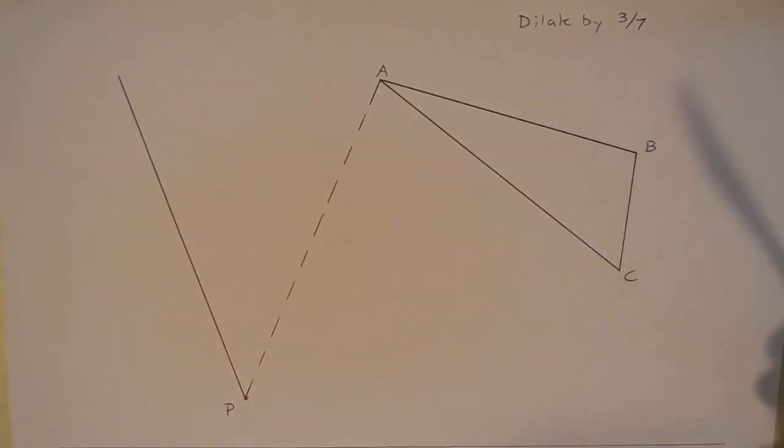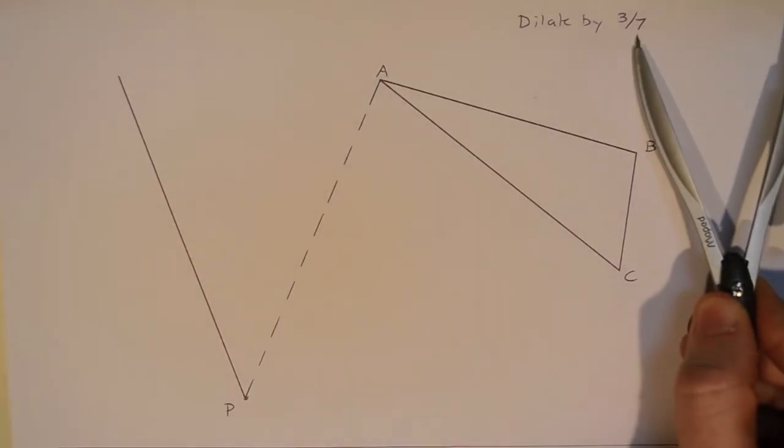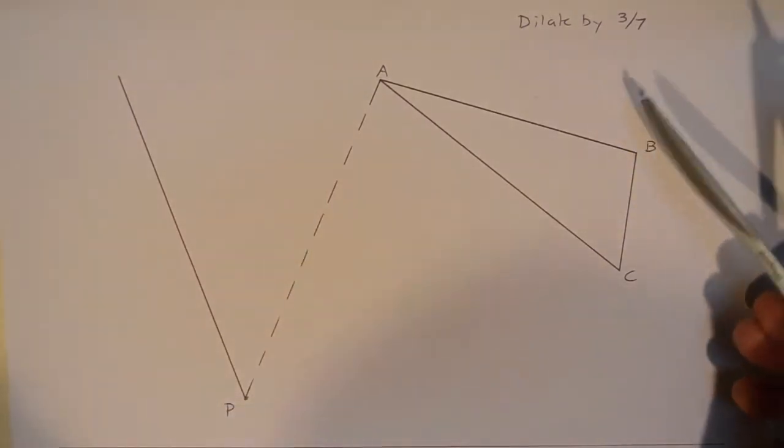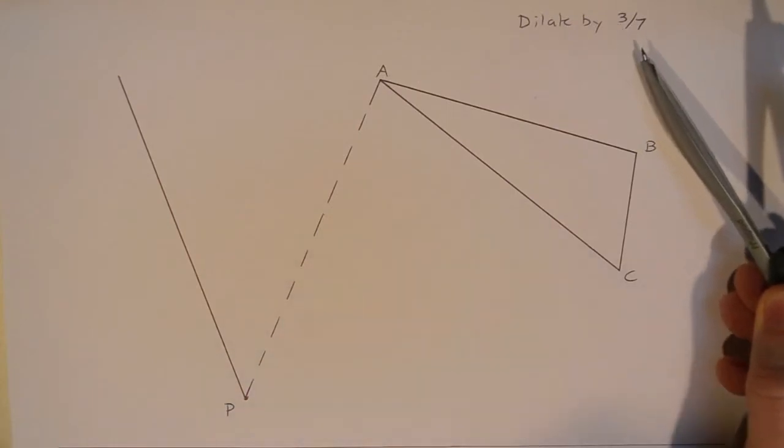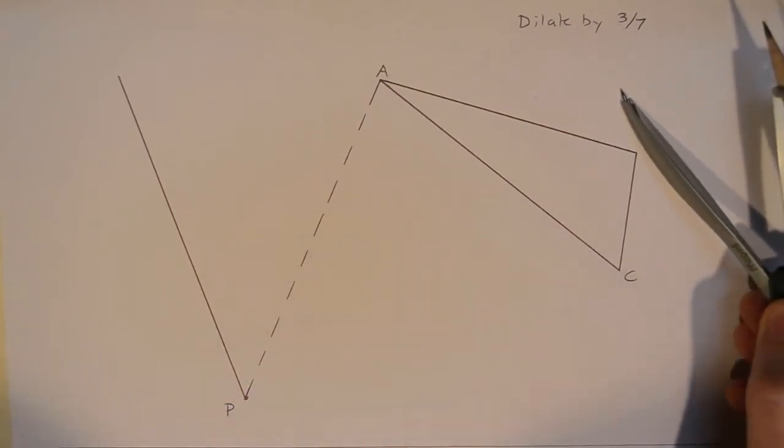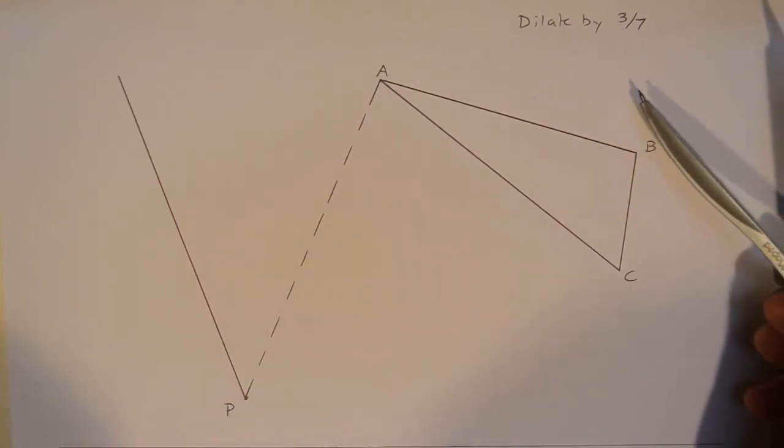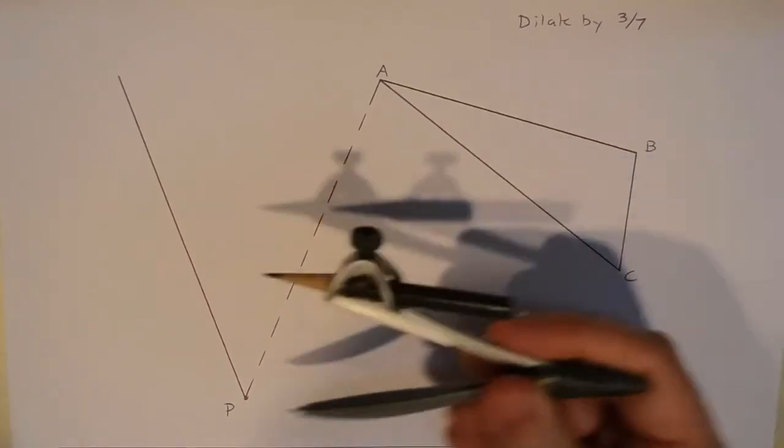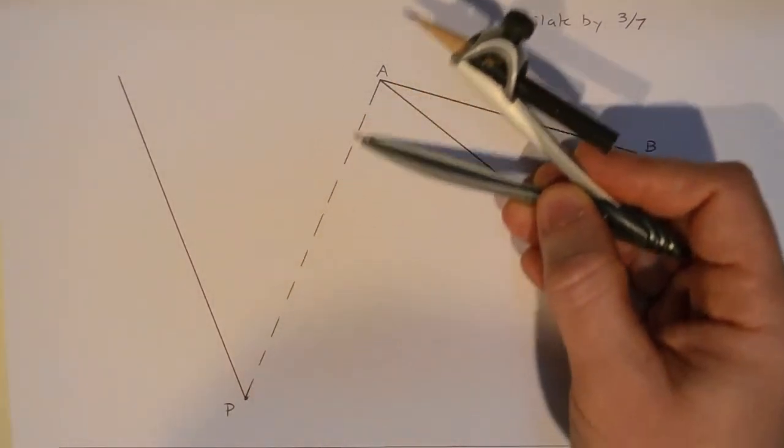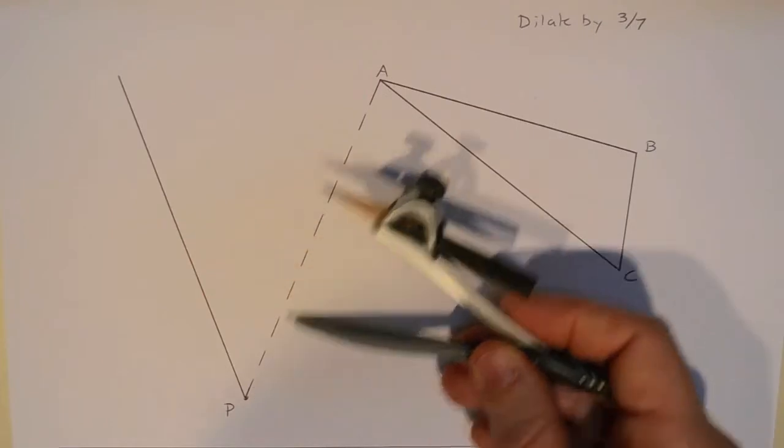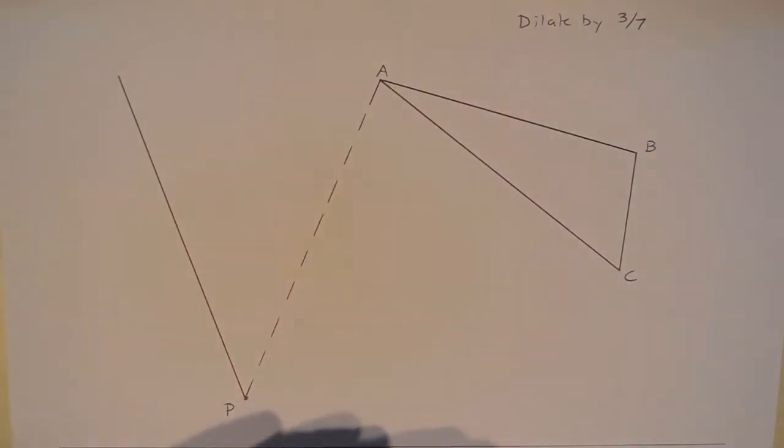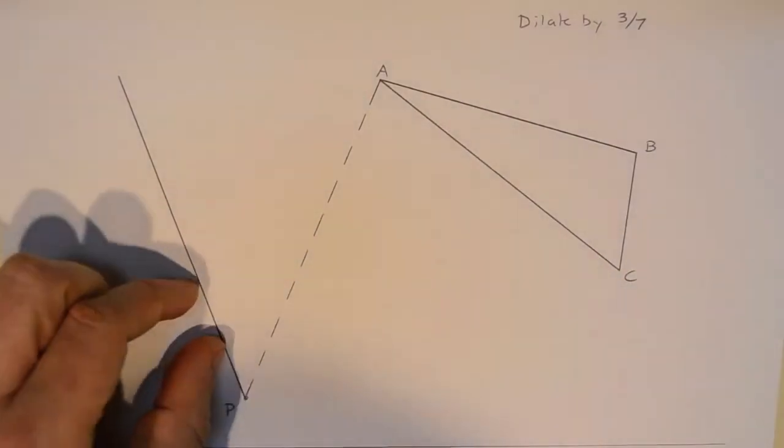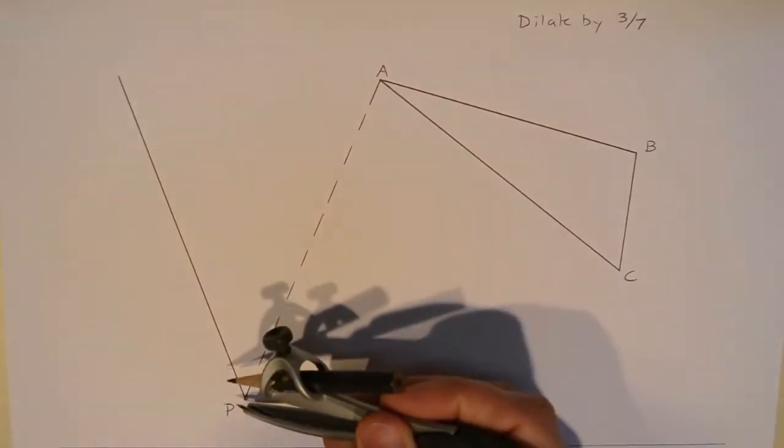Now, since I want to dilate by three-sevenths, that means I need to count by sevenths. If you think of three-sevenths as being three sevenths, where one-seventh would be one, then two-sevenths would be two sevenths, and we need three of them. So we're going to want to divide this line PA into sevenths so we can locate where three-sevenths of them are. That's going to require seven congruent marks along this line over here.